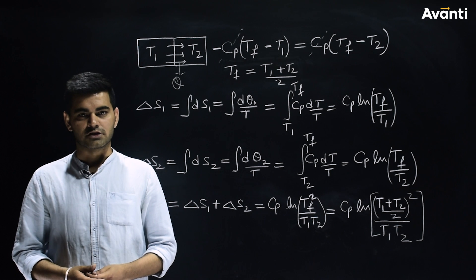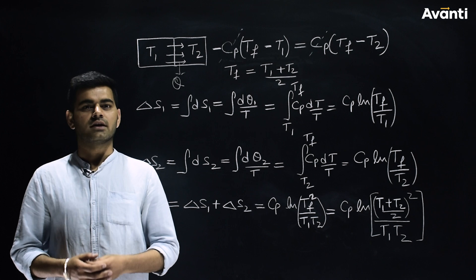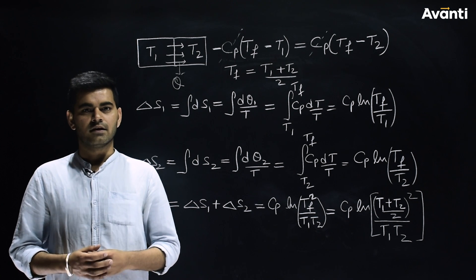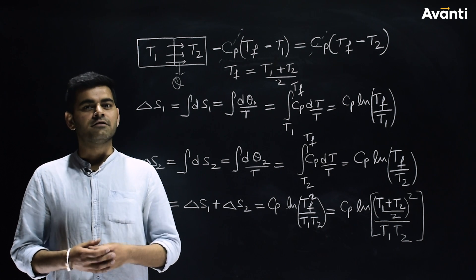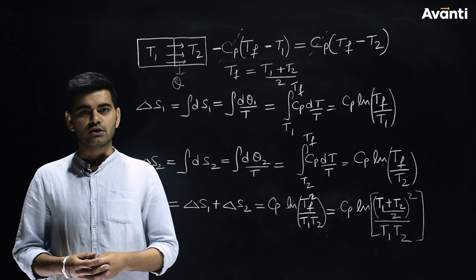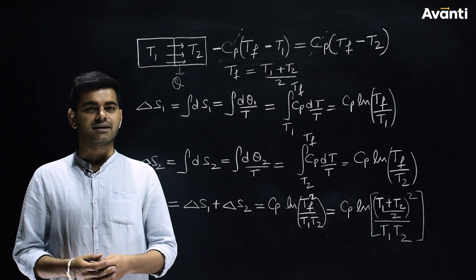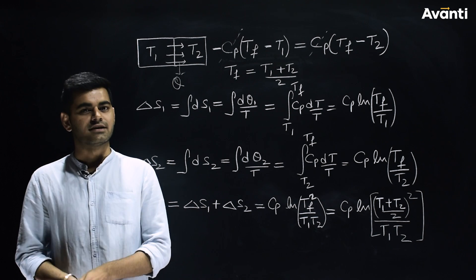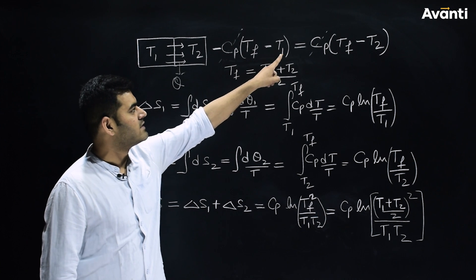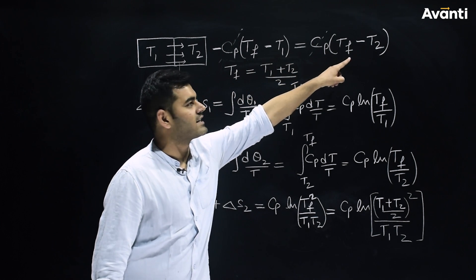I hope you have attempted this question. Now let's see what calculations are needed to solve it. Heat given away by block 1 is equal to the heat absorbed by block 2, and mathematically it can be written as: -Cp(Tf - T1) = Cp(Tf - T2).